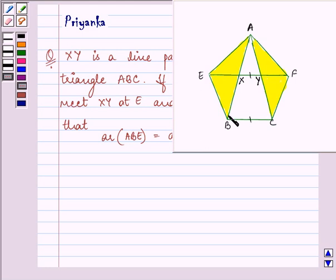And also, BE is parallel to AC, this line, and CF is parallel to AB. Now, let us start with our solution.